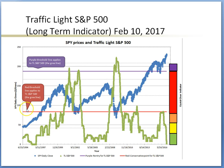The Y axis is the daily close of S&P 500. The blue line represents the daily close of S&P 500, and the green line is the Traffic Light S&P 500. The horizontal purple and red lines apply only to the traffic light S&P 500 green line. The red line is a long-term conservative line. When the green line crosses above the red line successfully, it is better to take a long-term position. When the green line crosses above or below the purple line, it is less risky to take a large position.